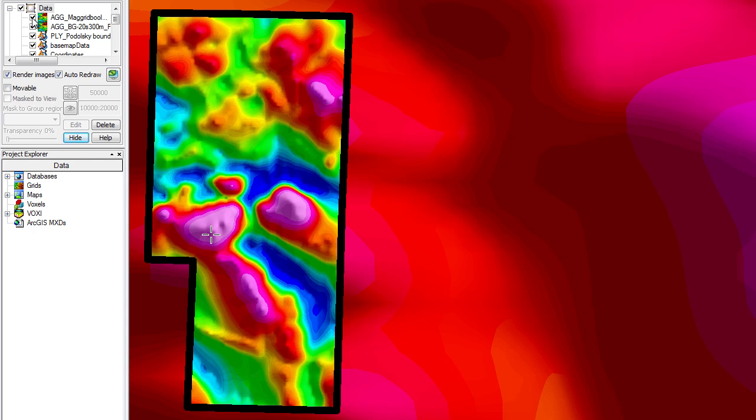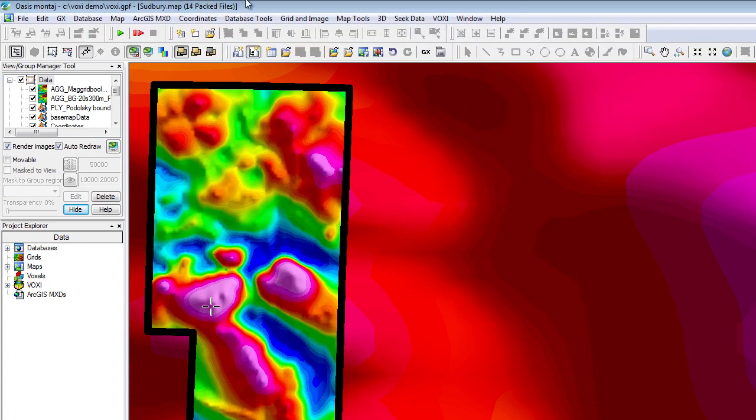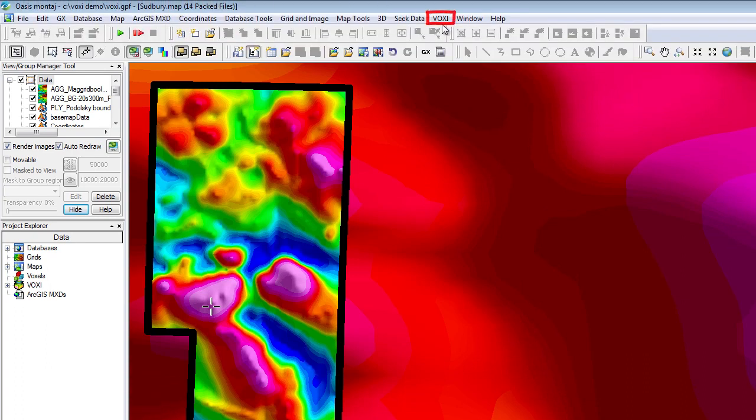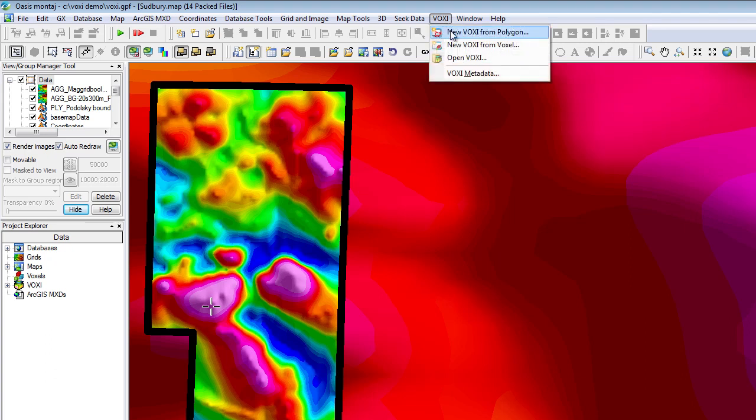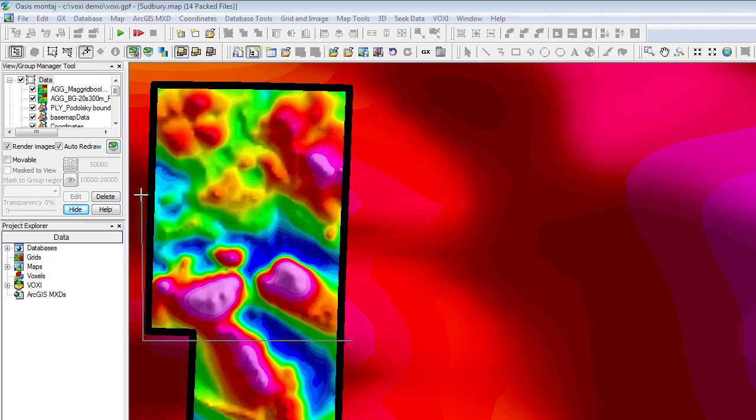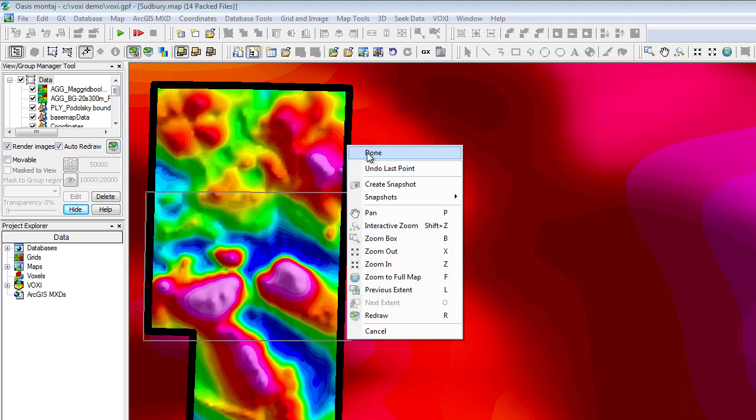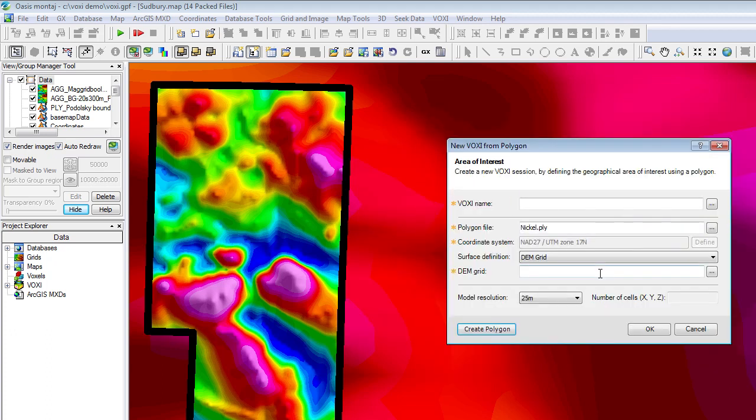To do that, I will go to the Voxi menu. Voxi will appear in your Oasis Montage menu bar in the April 2012 release. I will choose the Polygon option because I will draw a polygon around the area that I want to model. Also, I will give a unique name to my inversion session.